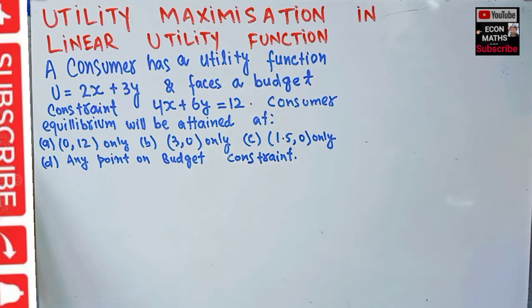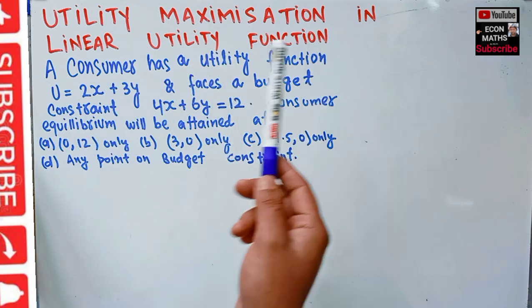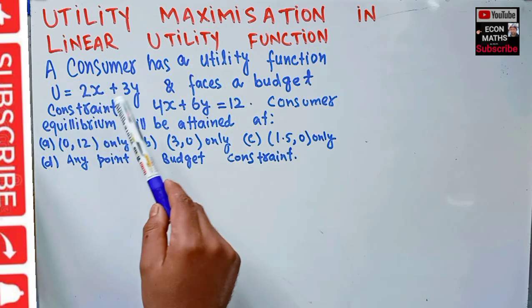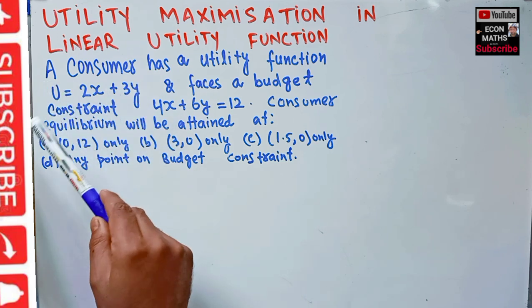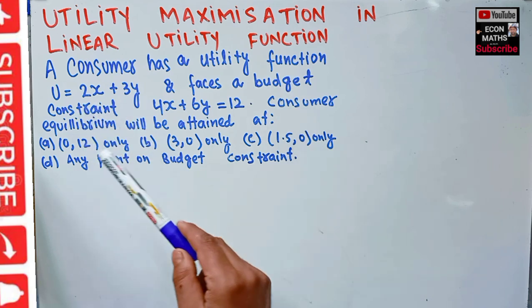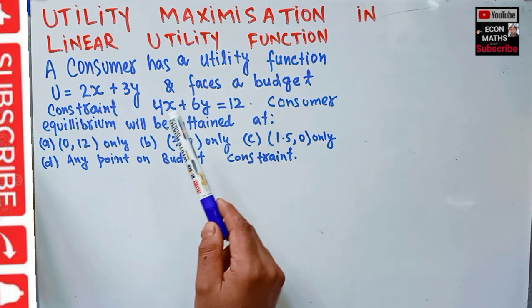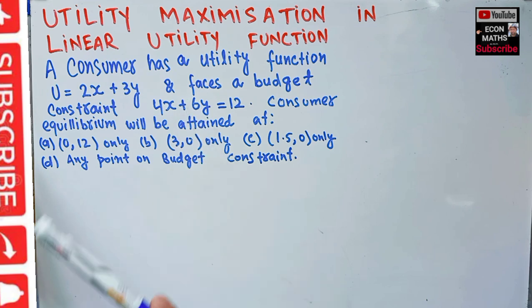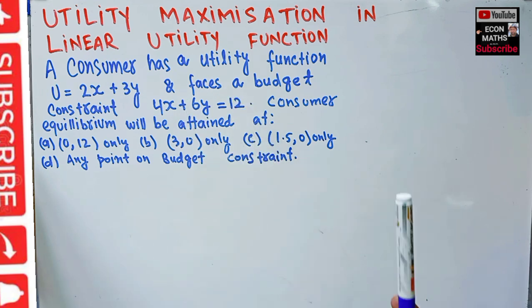Let us solve a question on utility maximization in case of linear utility functions. A consumer has a utility function U = 2x + 3y, meaning utility depends on the consumption of two goods x and y. The consumer faces a budget constraint: 4x + 6y = 12, where 4 is the price of x, 6 is the price of y, and 12 is the total income of the consumer.